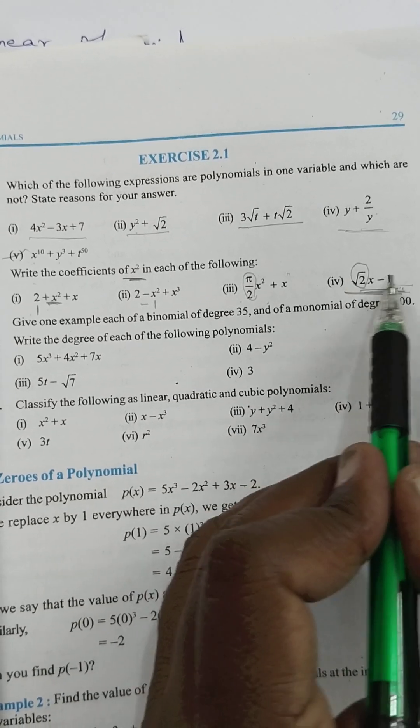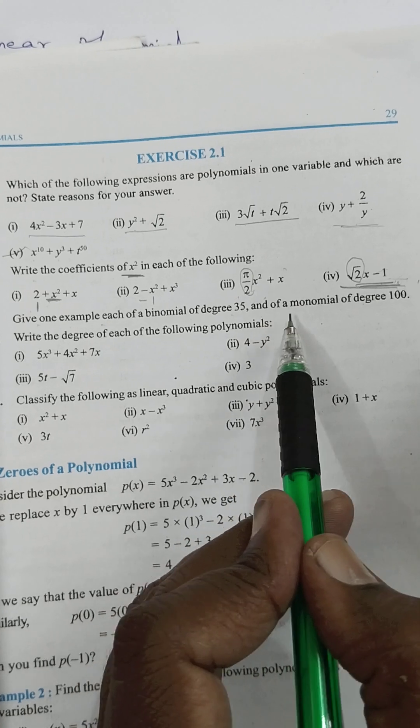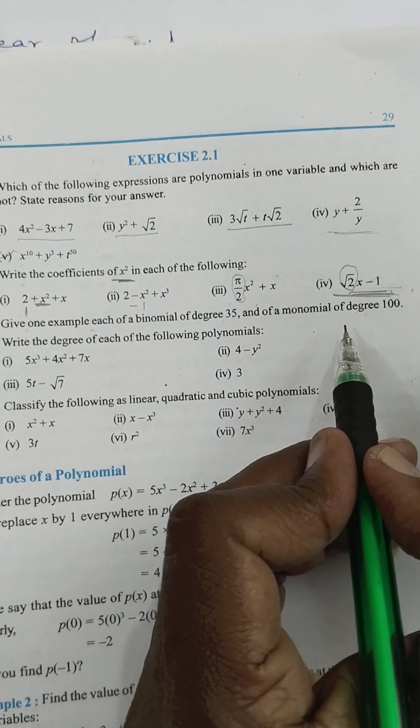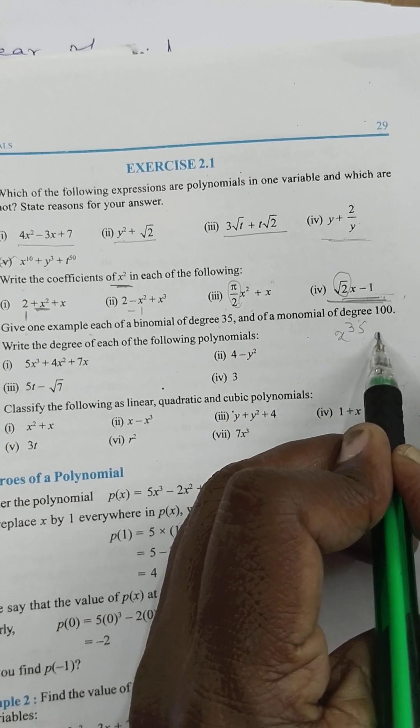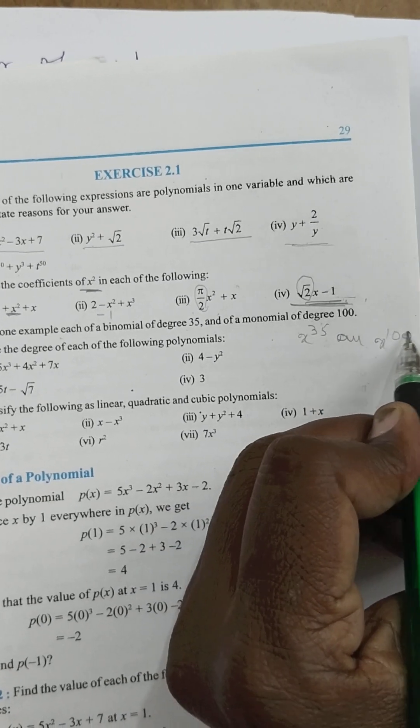Give an example each of a binomial of degree 35 and of degree 100. Take any one, x to the power of 35 and x to the power of 100.